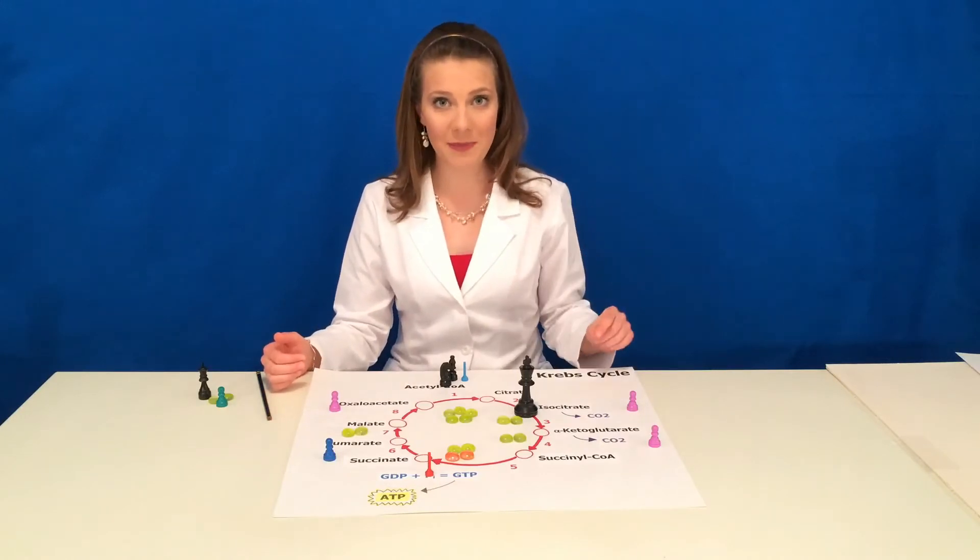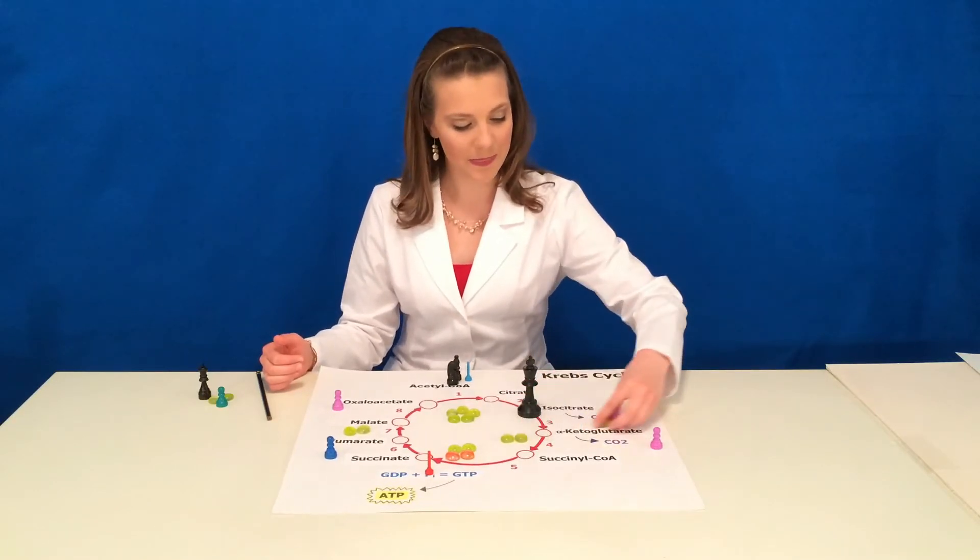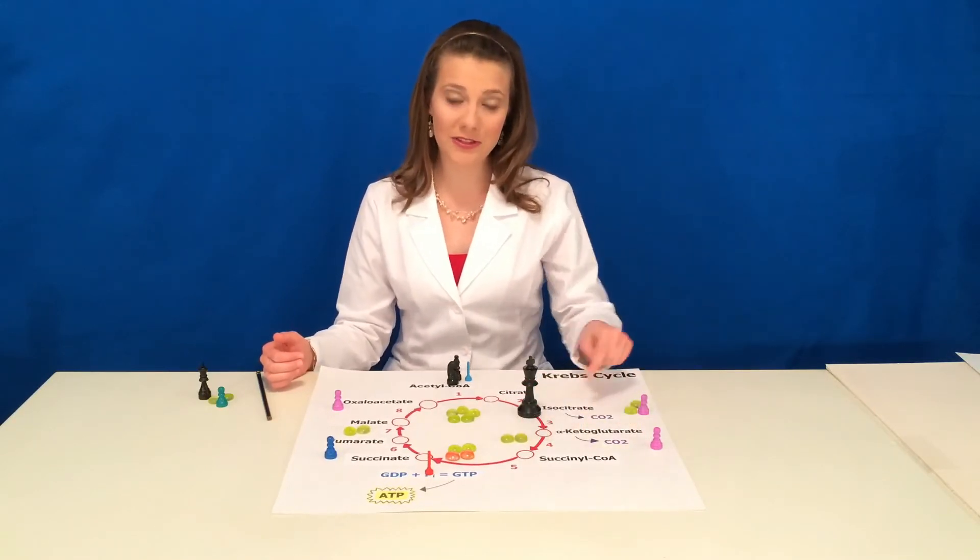In step three, our first peasant named NAD comes in and oxidizes isocitrate, taking two of his electrons. After he loses CO2, he becomes alpha-ketoglutarate.